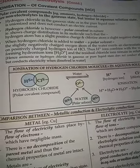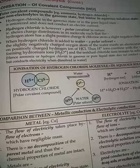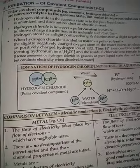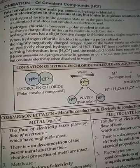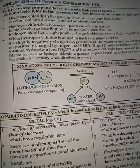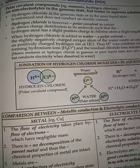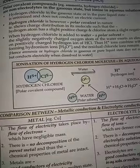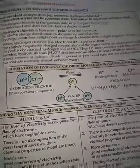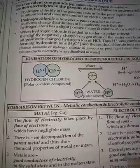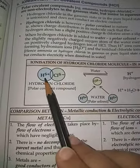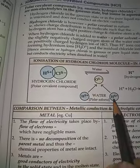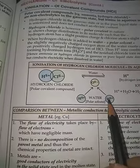Hydrogen chloride in the gaseous state or in the pure liquid state is unionized and does not conduct electric current. However, hydrogen chloride is polar covalent in nature — chlorine is more electronegative and attracts the shared pair of electrons towards itself, creating a slight negative charge on chlorine and a slight positive charge on hydrogen. When water is present, oxygen in water is slightly negative and hydrogens are slightly positive.